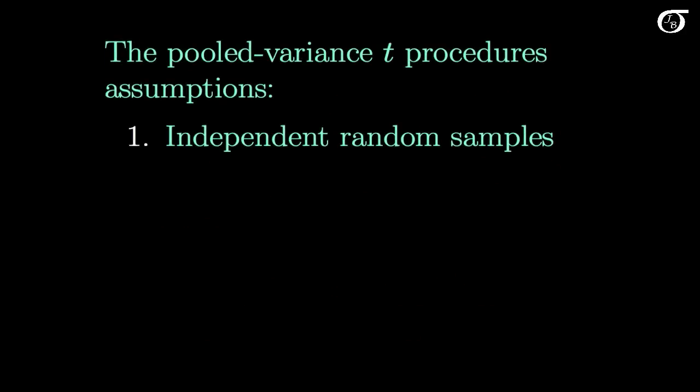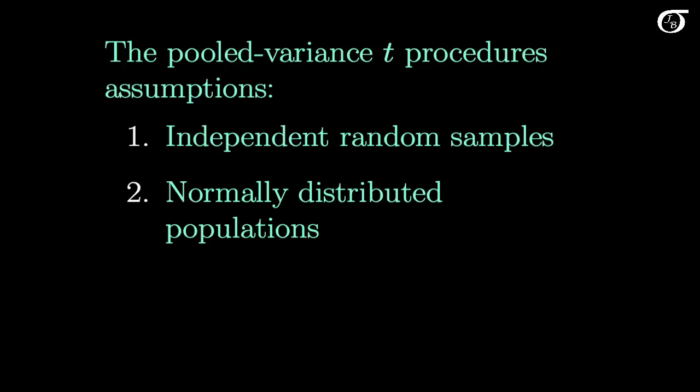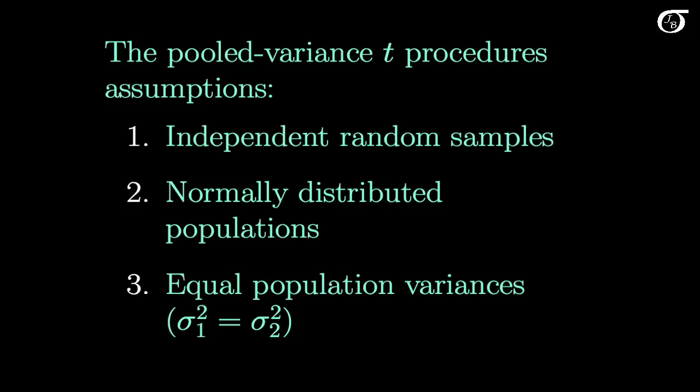We're going to assume that we have independent random samples from the populations of interest, which is the case for our example, and that we have normally distributed populations. We also have a third assumption that might seem a bit curious at first: that we have equal population variances.